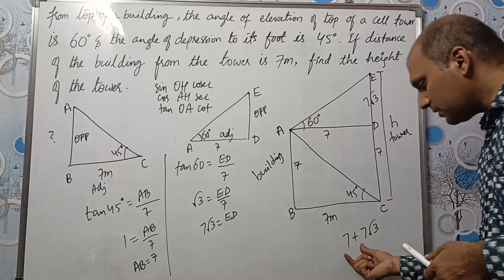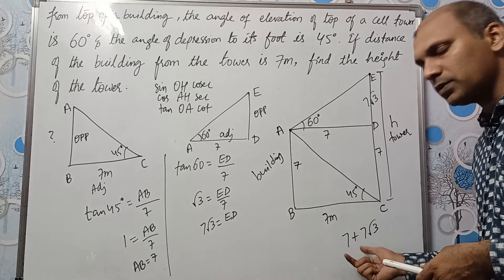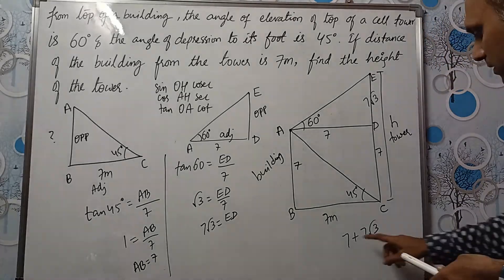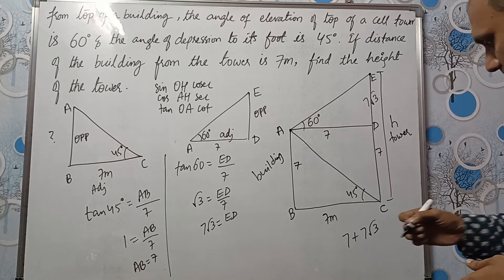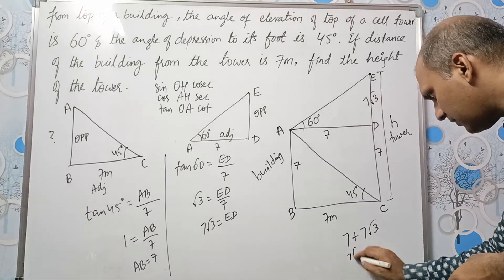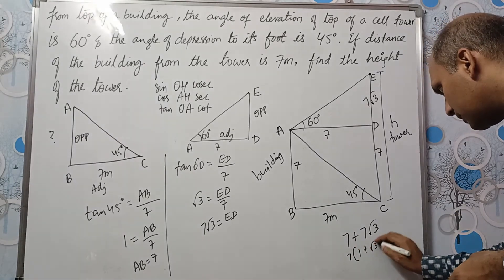Some students will add this 7 plus 7 and they will write 14 root 3. Which is a common mistake. Don't do that. How can we add this then? We can take 7 common and write 1 plus root 3 here.